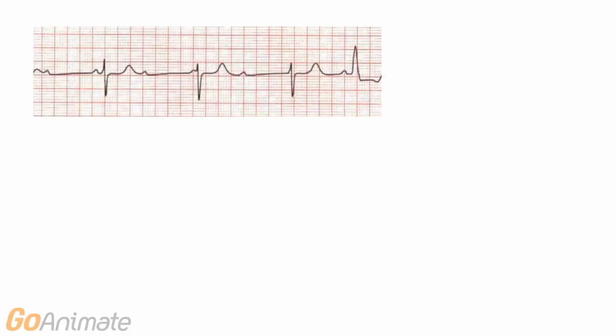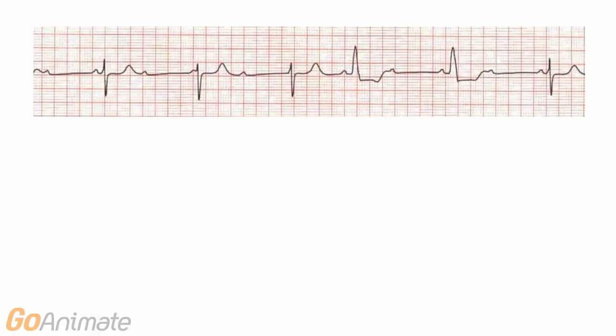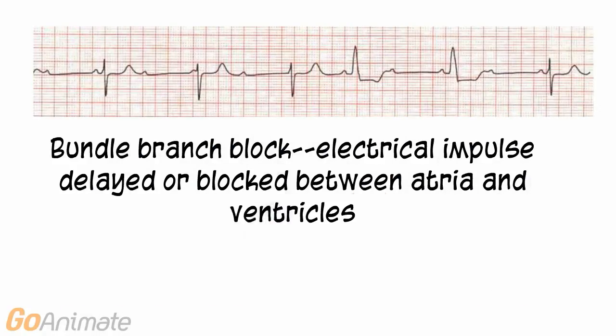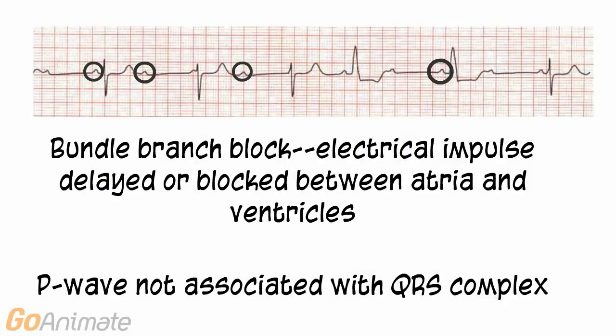In a bundle branch block, the electrical impulse is delayed or blocked between the atria and ventricles. There are different types of blocks, but in a third degree block, the P wave is not associated with the QRS complex.